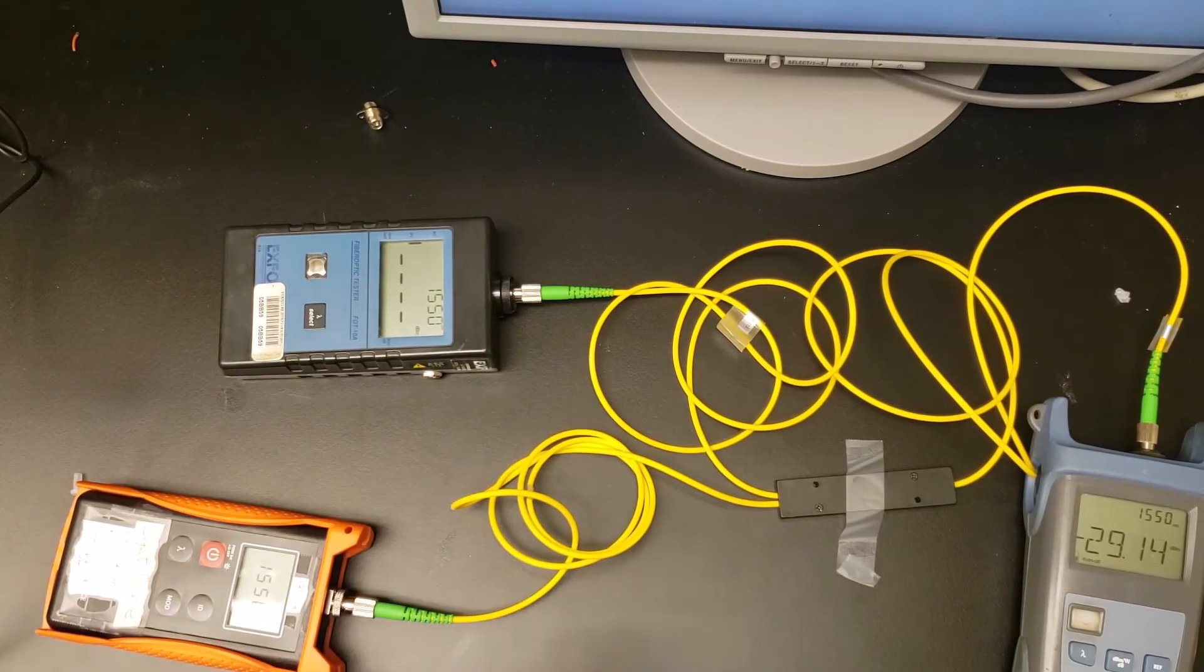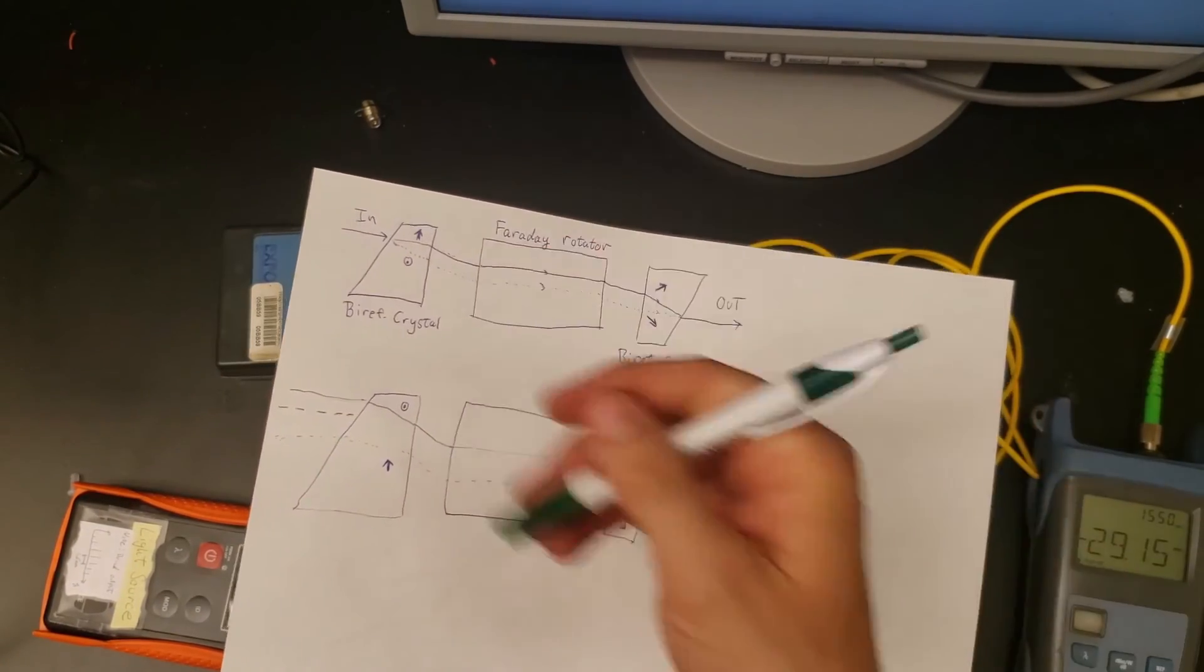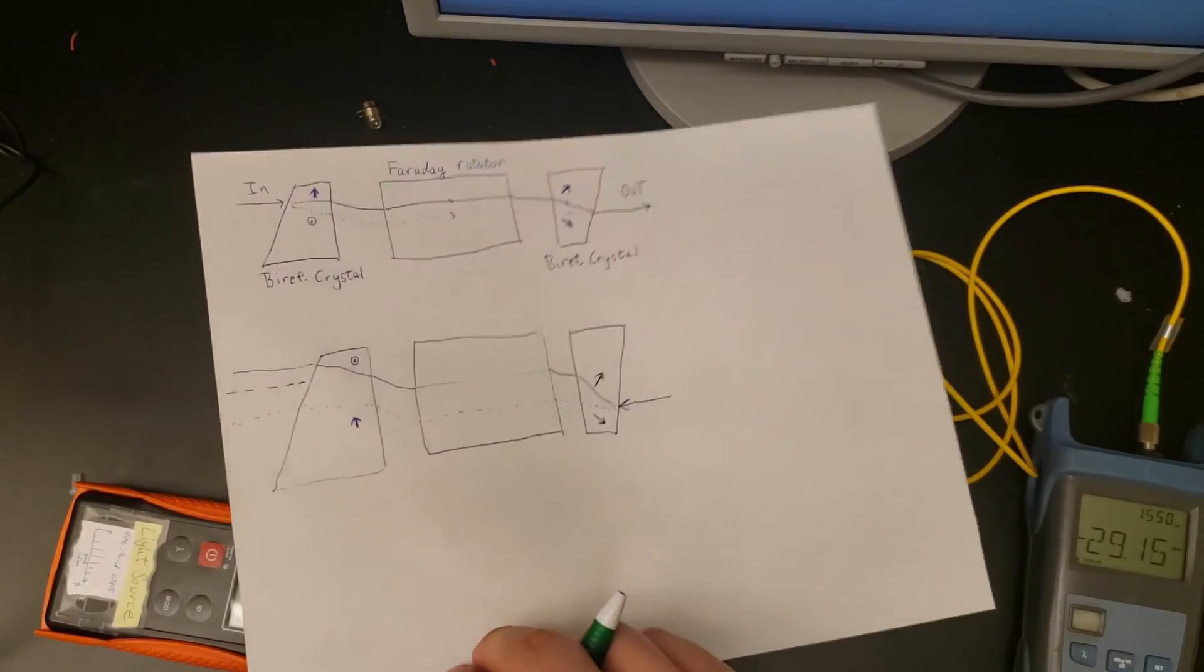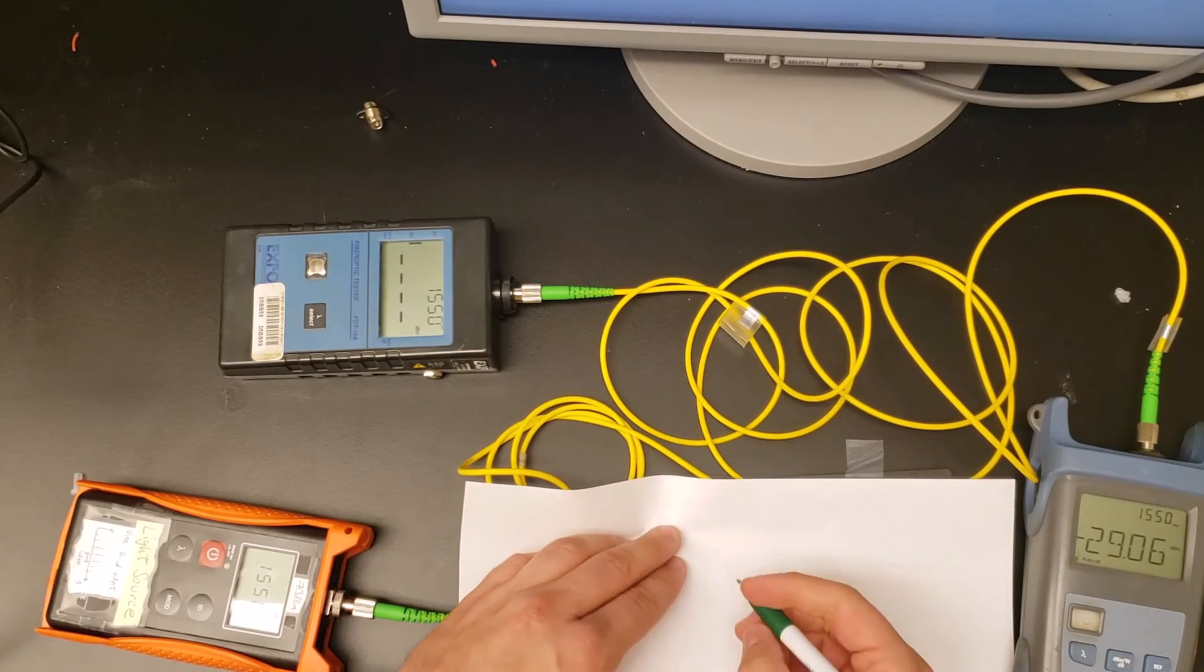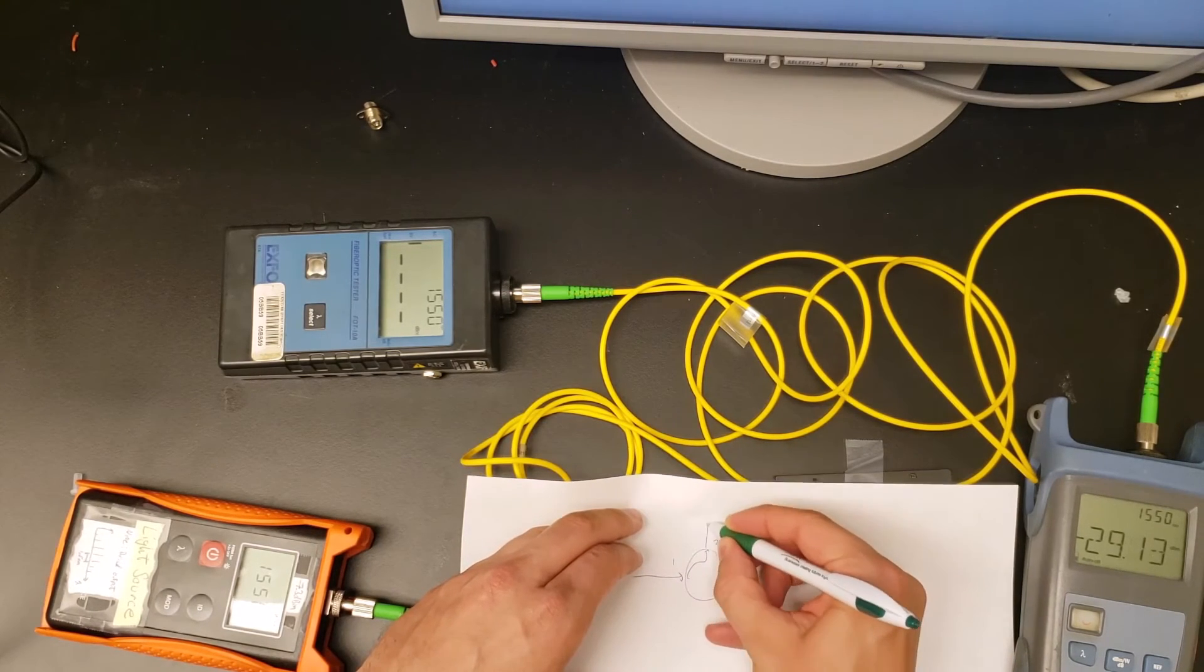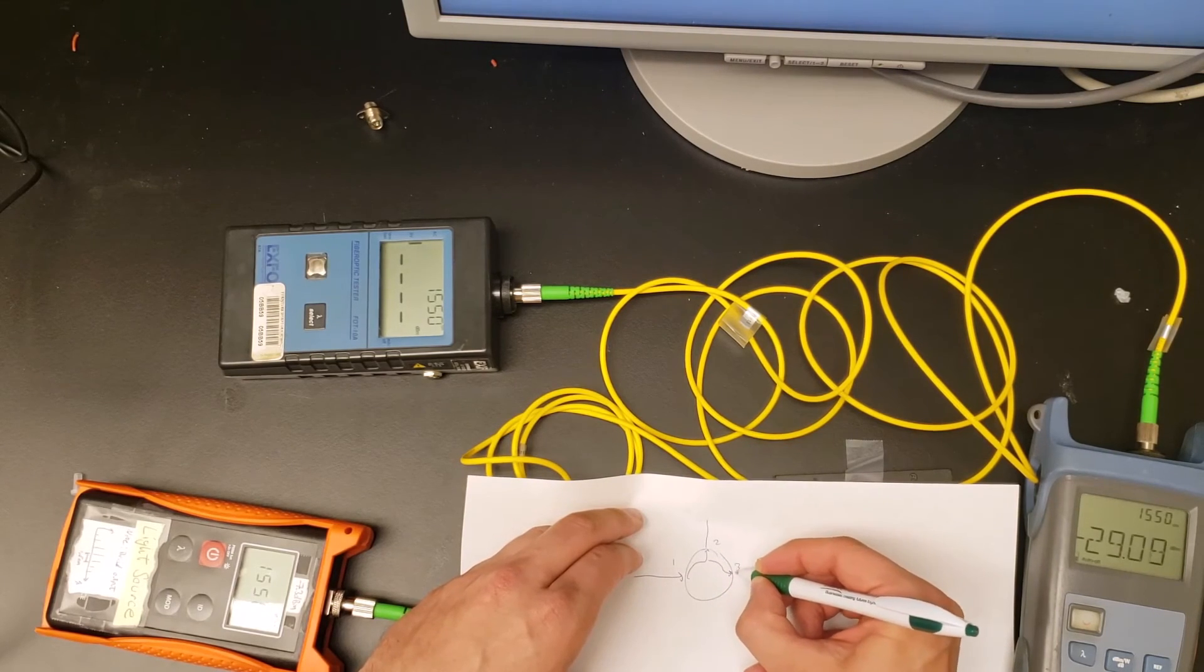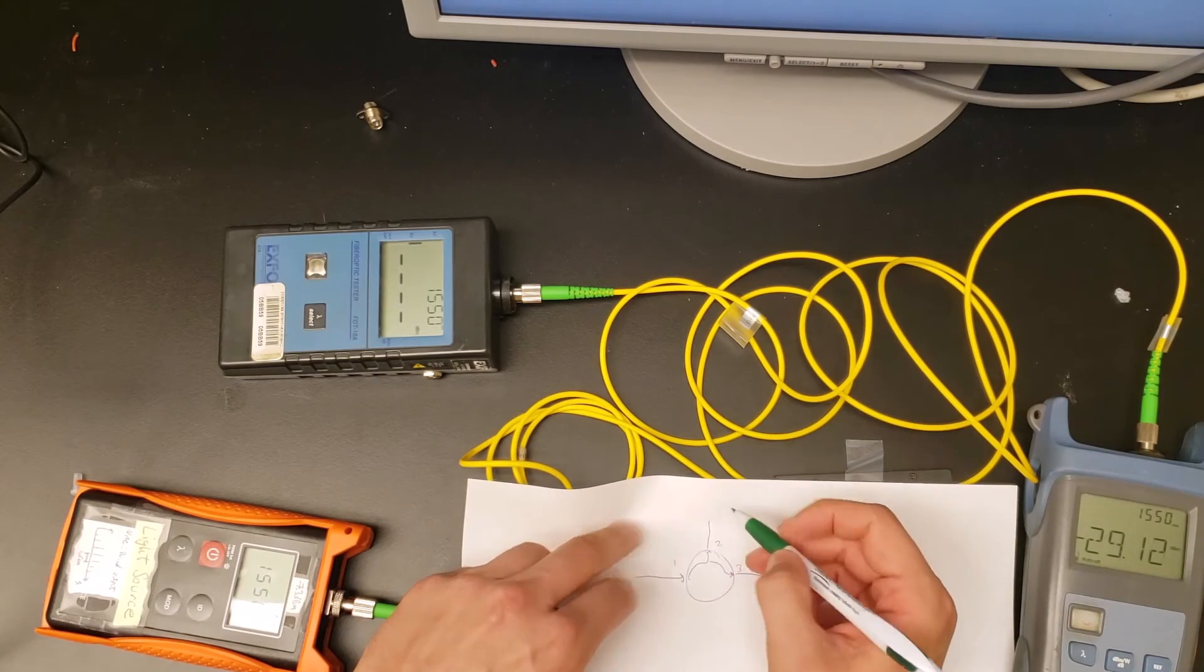Essentially what we have here is called a circulator, based on some of the same principles we used for the isolator, but it's a little bit more involved, so I'll just link to resources that explain it in more detail. When we draw diagrams of optical setups, we represent circulators like this: a circle with an input here, port one, that goes to port number two, and this one goes back into port number three.